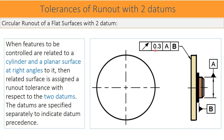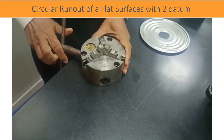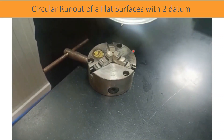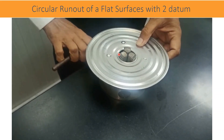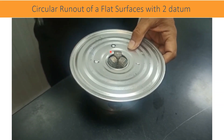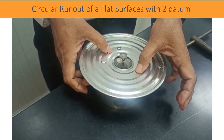In the given drawing, a surface run out is controlled with two datums. When features to be controlled are related to a cylinder and a planar surface at right angles to it, the related surface is assigned a run out tolerance with respect to two datums. The datums are specified separately to indicate datum precedence — meaning a primary datum and a secondary datum — and the sequence is very important. Normally, such application is seen for short length cylinders or holes where sufficient datum length cannot be established. Here, the hole becomes a datum as a location control or origin point, and the planar datum gives the orientation of the part.